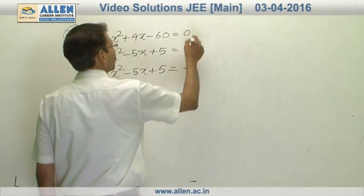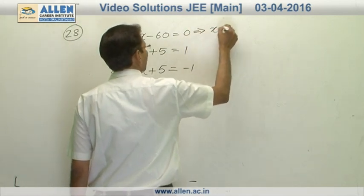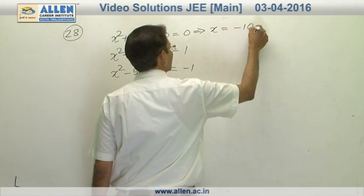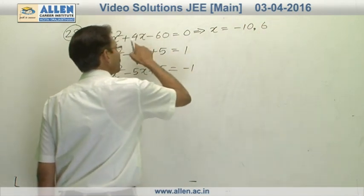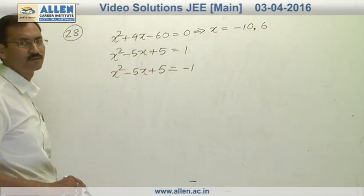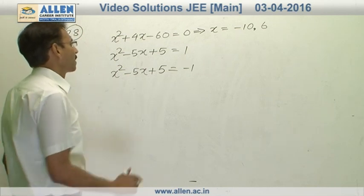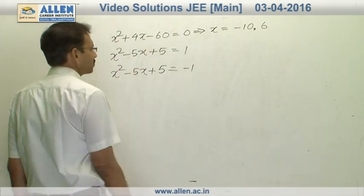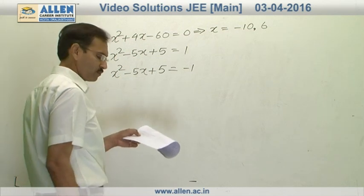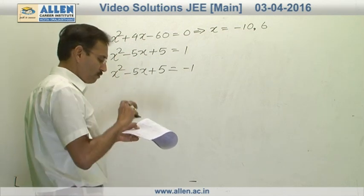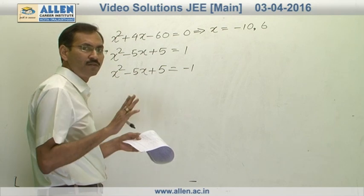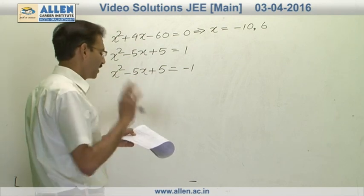In the first case, we have x as minus 10 and 6. As the product is minus 60 and the sum is minus 4. And for these values of x, the base is positive 2. So a positive number raised to the power 0 will give us 1. Therefore, both are acceptable.